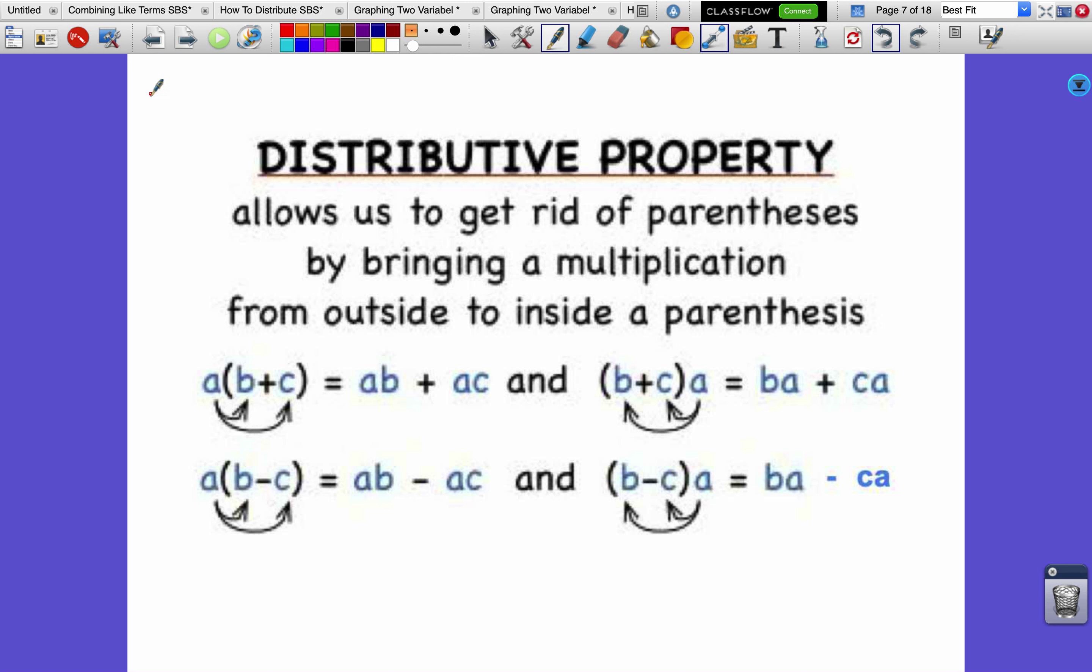The distributive property allows us to get rid of parentheses by bringing the multiplication from outside to inside a parenthesis. We can distribute forwards, backwards, to addition or subtraction. That's all this slide is showing here - don't worry about copying all of these down.